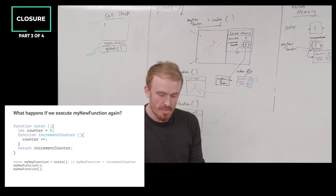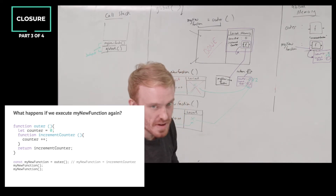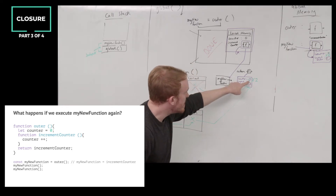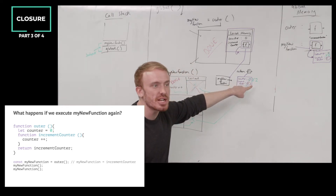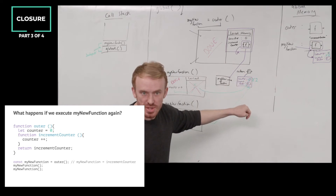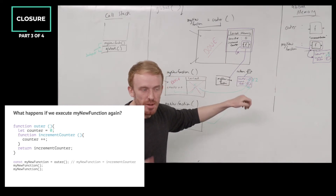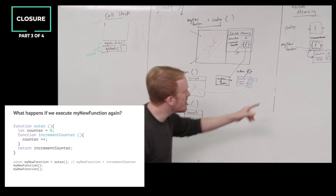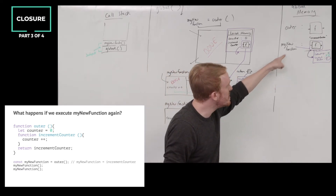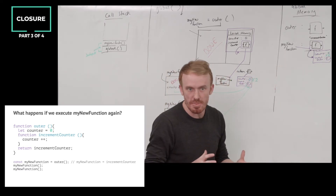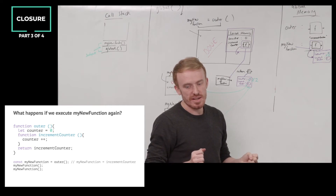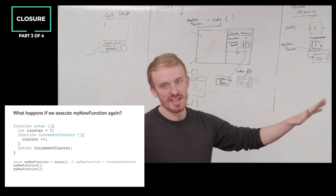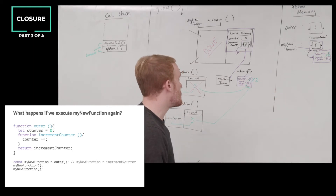This has profound consequences. My function now has data that can stick around between calls, between invocations. My function has a memory — a little store, a little cache associated with the definition of it, bundled up. This allows us to do profound things, which we're going to see in a minute.